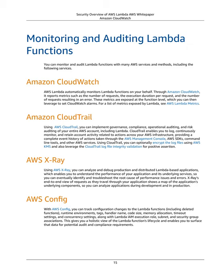AWS X-Ray: Using AWS X-Ray, you can analyze and debug production and distributed Lambda-based applications, enabling you to understand the performance of your application and its underlying services and identify the root cause of performance issues and errors. X-Ray's end-to-end view of requests as they travel through your application shows a map of the application's underlying components. AWS Config: With AWS Config, you can track configuration changes to Lambda functions, including deleted functions, runtime environments, tags, handler name, code size, memory allocation, timeout settings, concurrency settings, and Lambda IAM execution role, subnet, and security group associations — giving you a holistic view of the Lambda function lifecycle for audit and compliance.